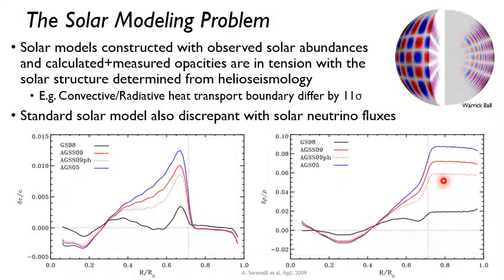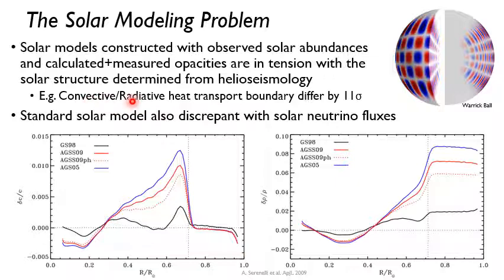One last thing: the standard solar model is also slightly discrepant with solar neutrino fluxes. The solar neutrino flux is related to nuclear physics data as well as the core temperature, so there is some tension there. Another interesting tension is the boundary between convective and radiative heat transport, which we'll cover in a couple of chapters. So this is an interesting open problem — we currently don't fully understand the structure of the sun. These notes were recorded in September 2020, so potentially this will be solved at some point, but for now it's a pretty interesting problem in astrophysics.